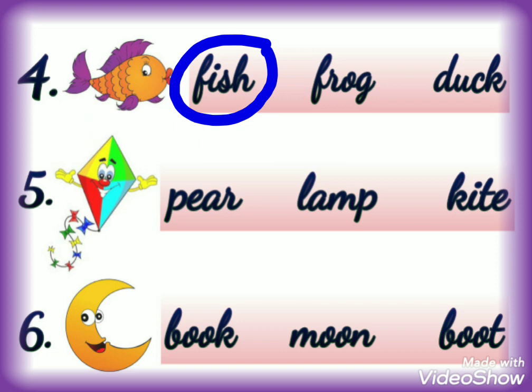Number 5 — this is the picture of kite. We will read the options. First option is P-E-A-R, pear — this is not the right answer. The next option is L-A-M-P, lamp — this is also not the correct answer. K-I-T-E, kite — yes, this is the correct answer, so we will put this answer in a circle. Now we will move on to the next number.